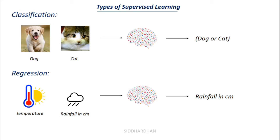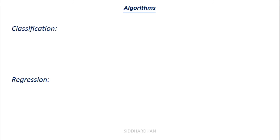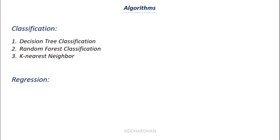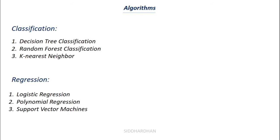So in classification we predict a class or type, while in regression we predict a number — that is the core difference. Some important classification algorithms include Decision Tree, Random Forest, and K-Nearest Neighbor. Regression algorithms include Logistic Regression, Polynomial Regression, and Support Vector Machine Regression. Don't worry if these are unfamiliar — we'll cover each algorithm in detail during the hands-on project videos.